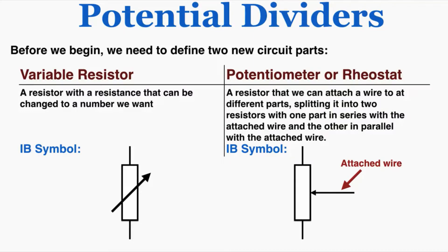The symbol on the right is for a potentiometer, or a rheostat — that's another name for a potentiometer. A potentiometer is a resistor that we can attach a wire to at different parts, splitting it into two resistors, with one part in series with the attached wire and the other in parallel with the attached wire.